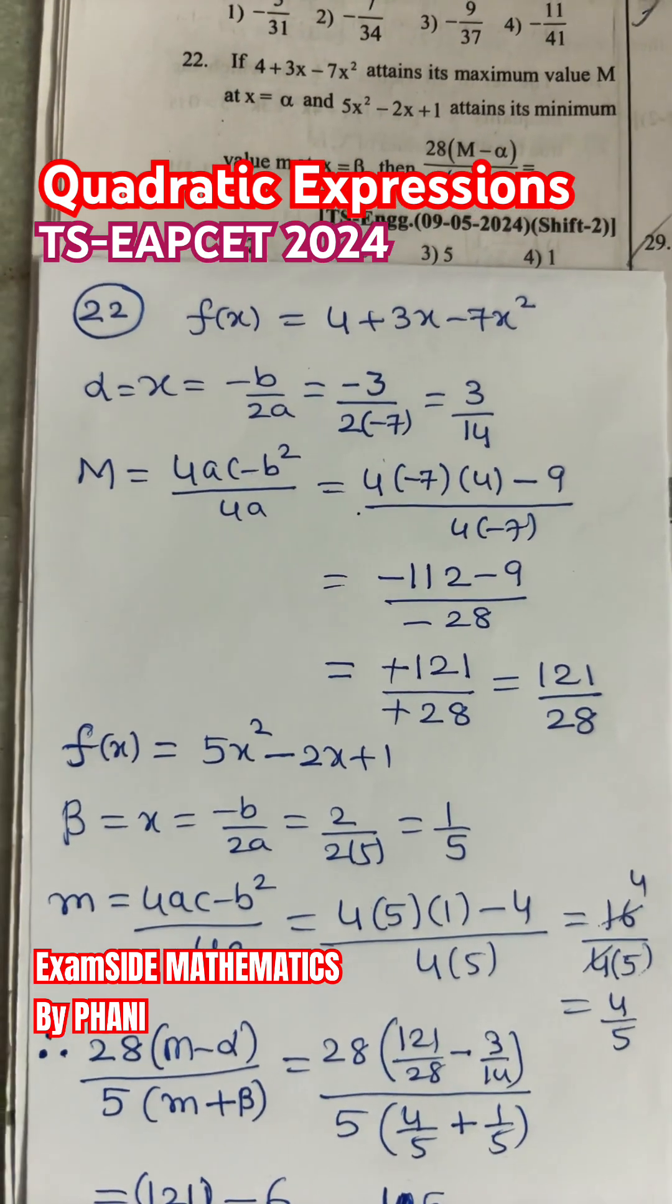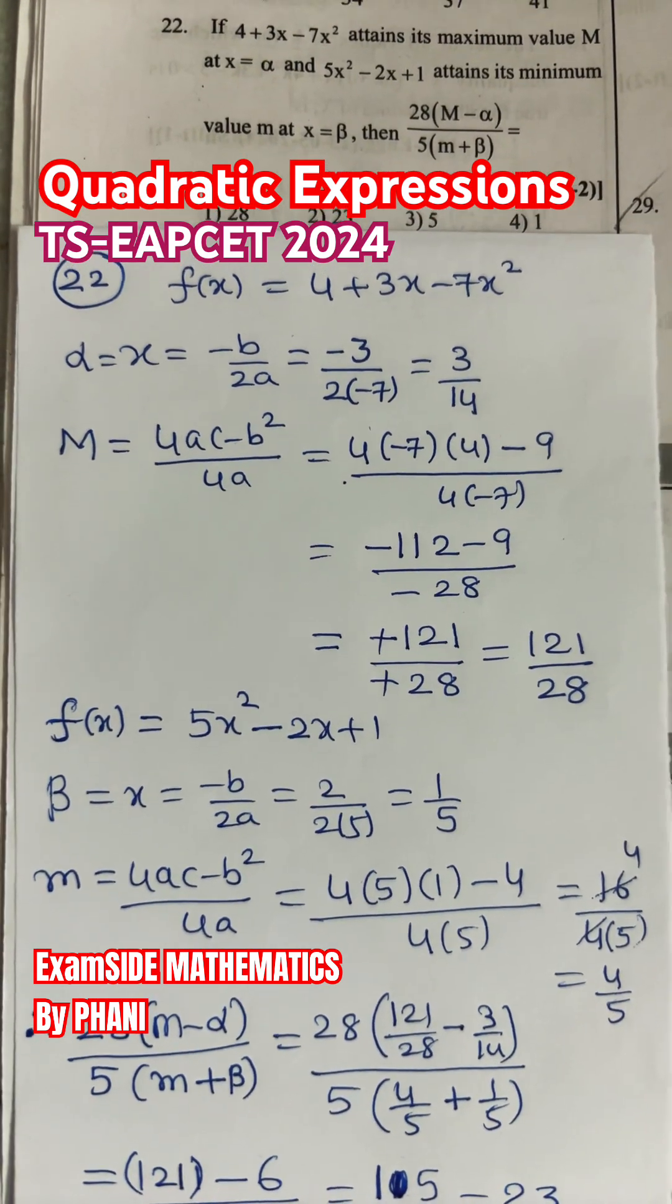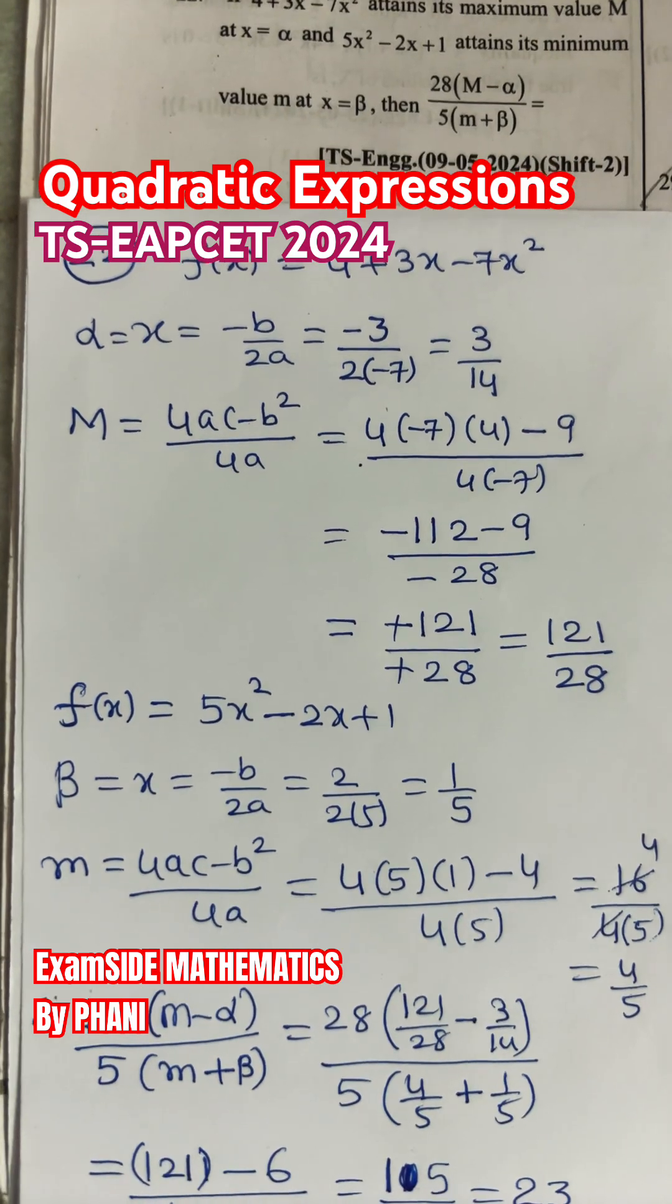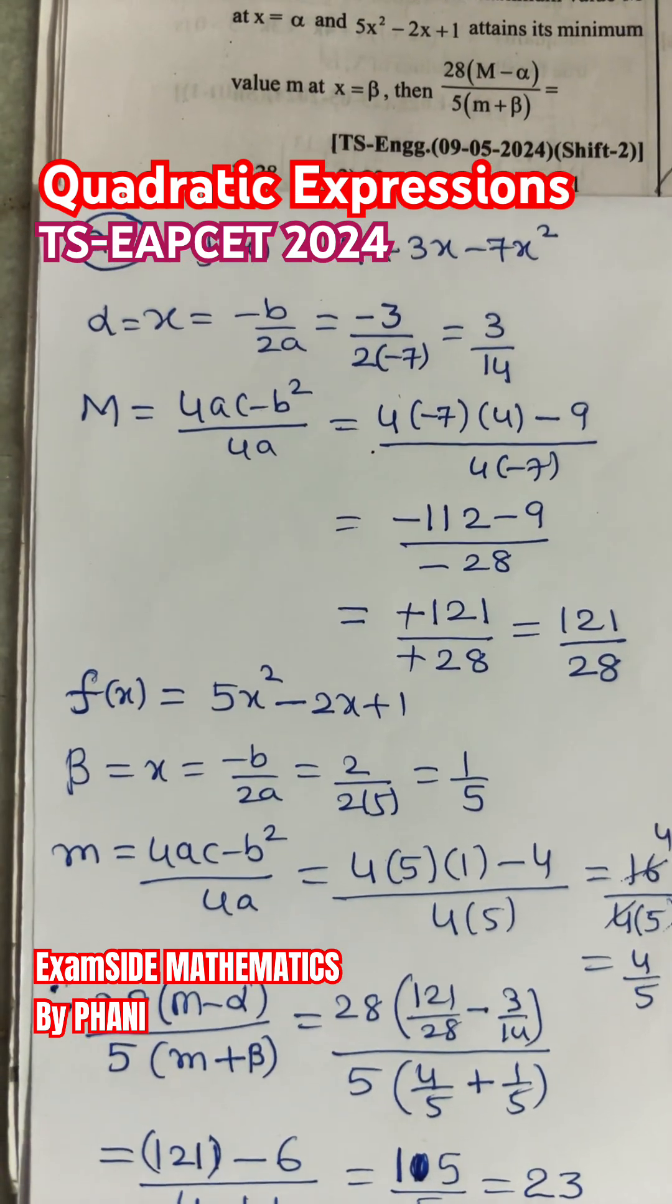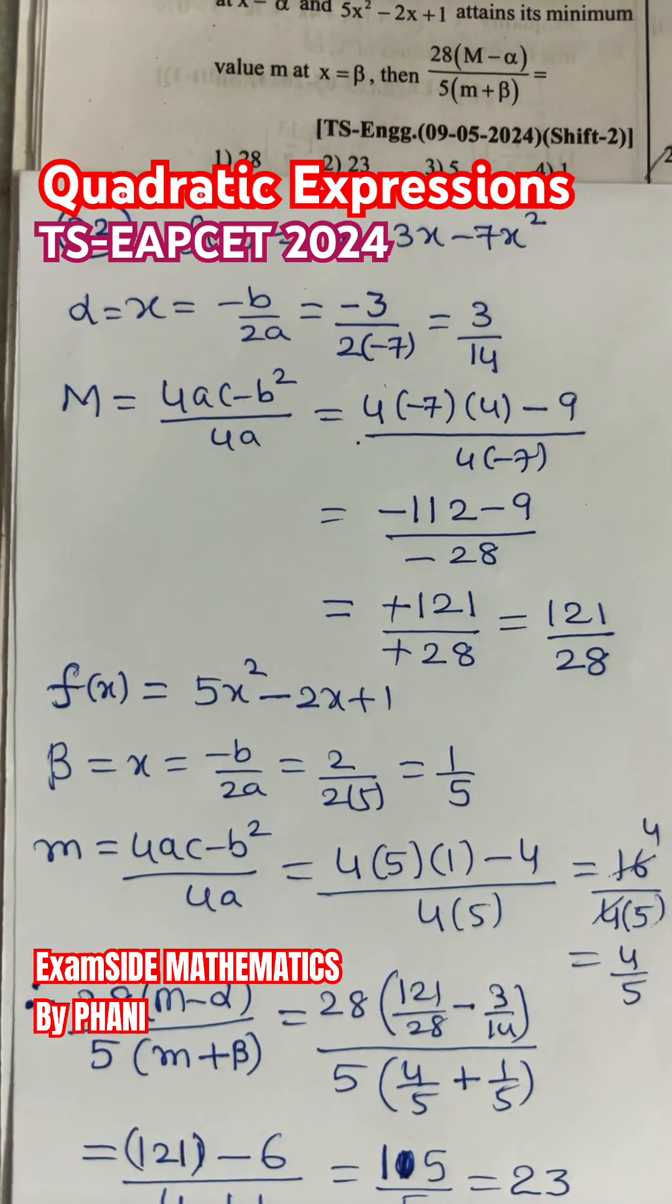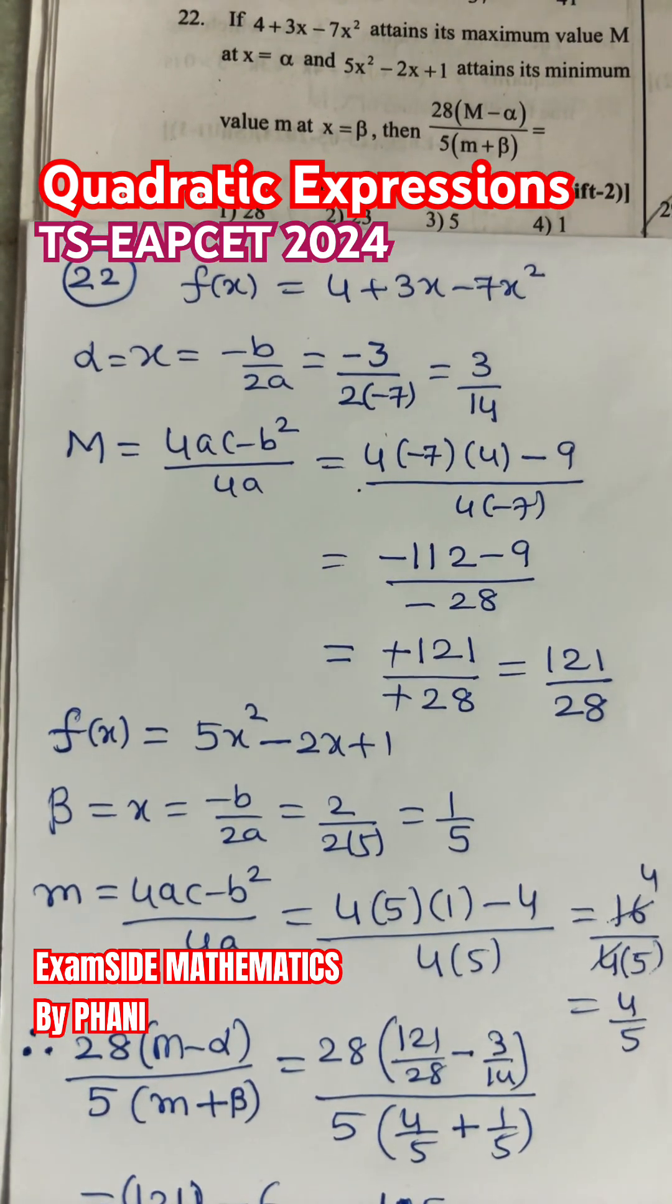Another quadratic expression f(x) is given as 5x² - 2x + 1, and x² coefficient is a = 5 which is greater than 0. So, x² coefficient is greater than 0,